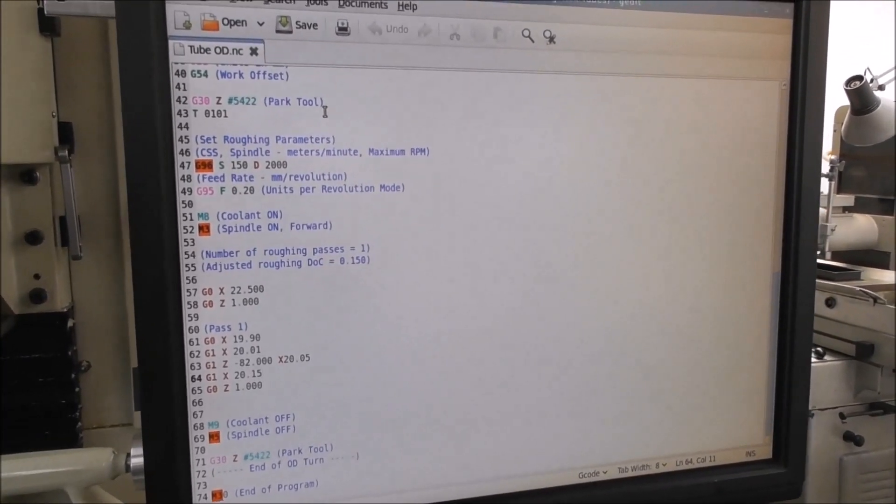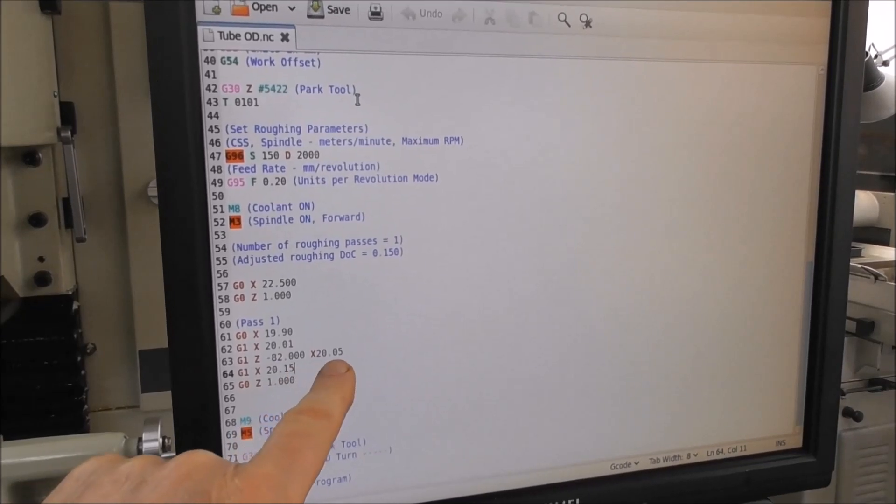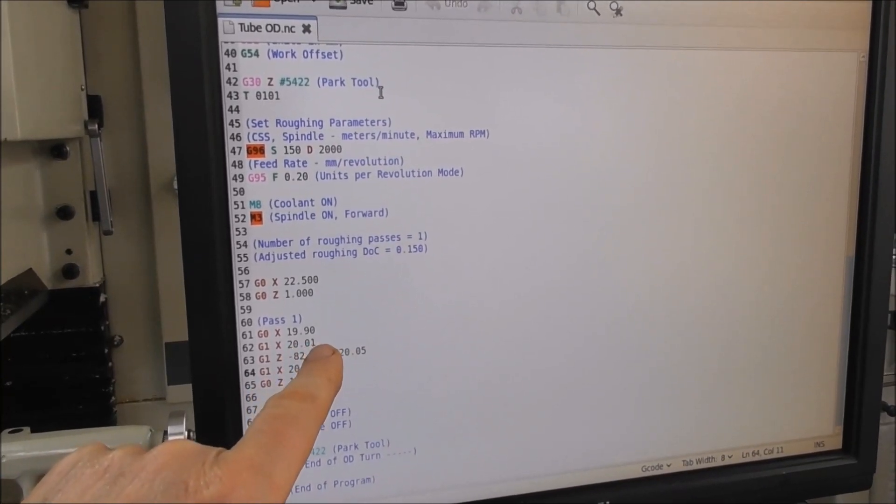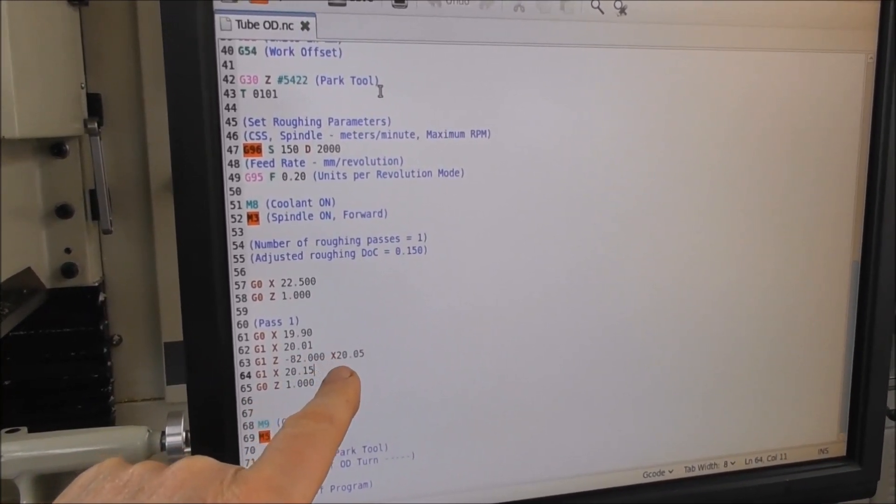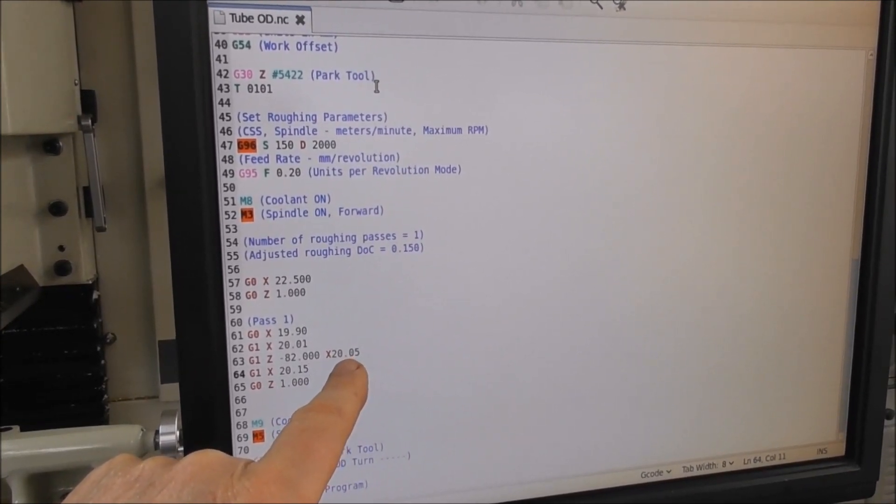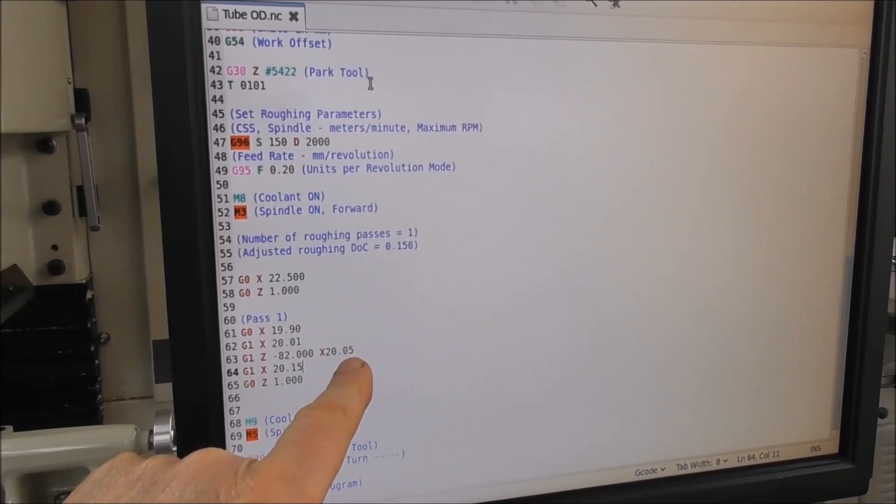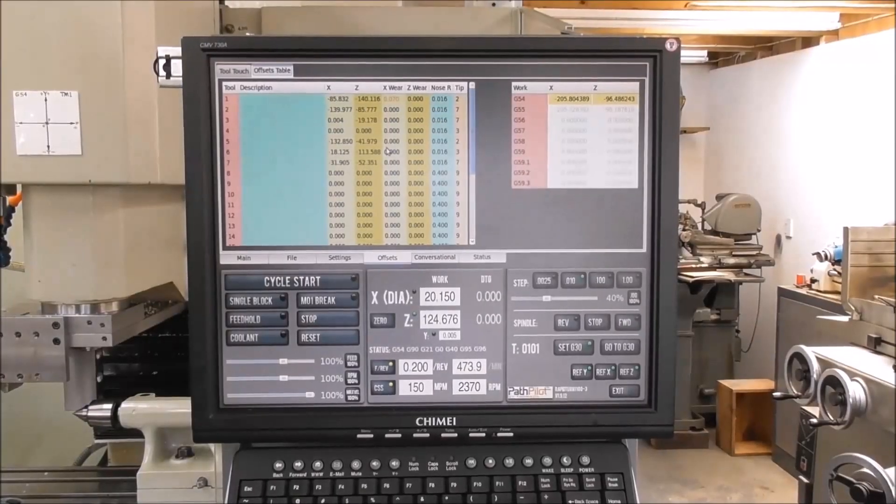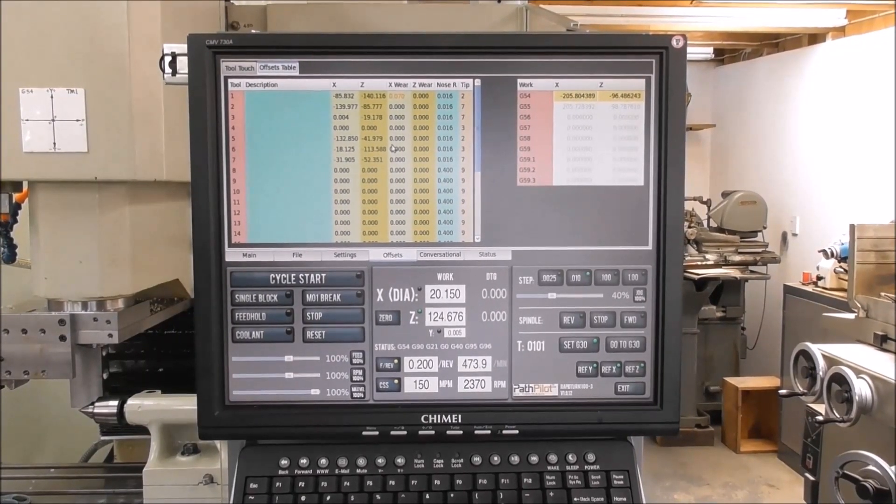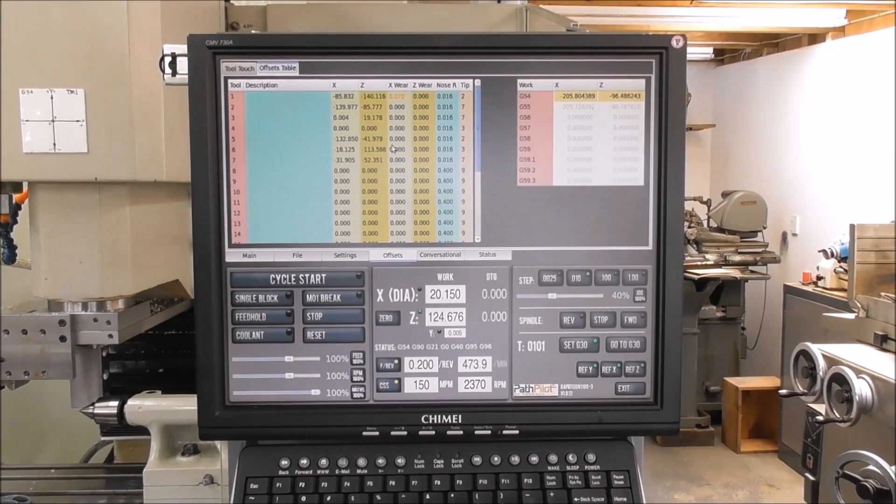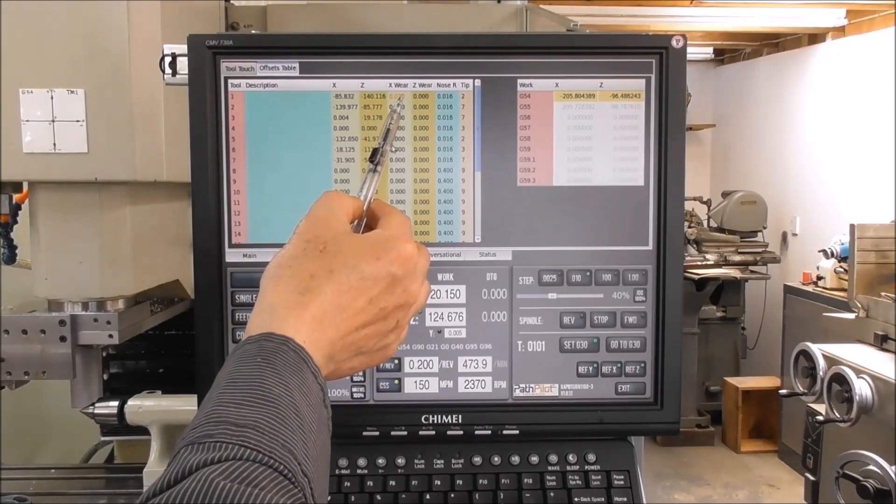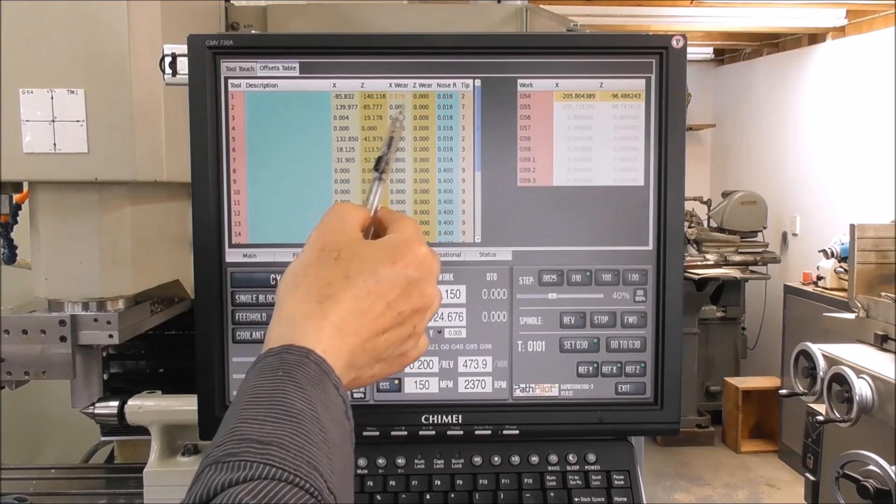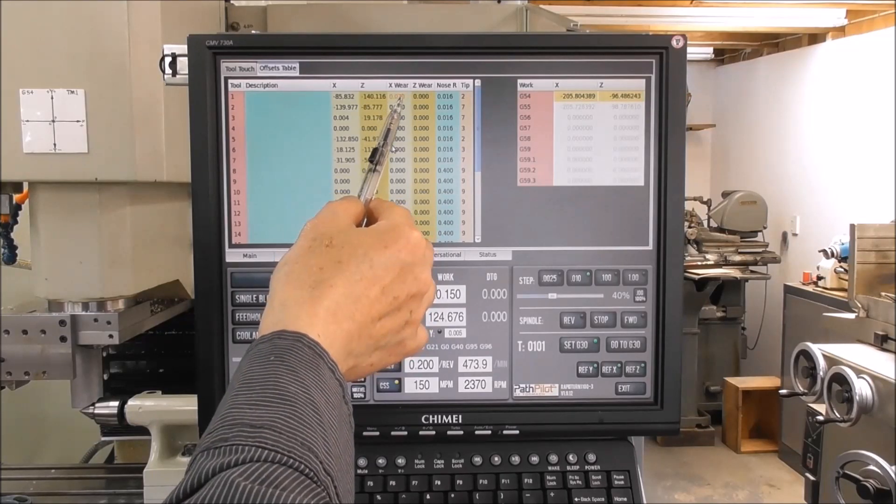Another advantage that a NC lathe has over a manual lathe is that you can really easily control the parallelness of the part. If I want a 20.01 diameter and it's 82 millimeters long, I can give it a destination diameter of 20.05 and that will generate a taper to offset the error that I'm getting from that machining pass. Another advantage of NC turning is in addition to the taper and parallel compensation, there's wear offsets in the X and the Z, so you can fine tune your diameter on the fly very easily.